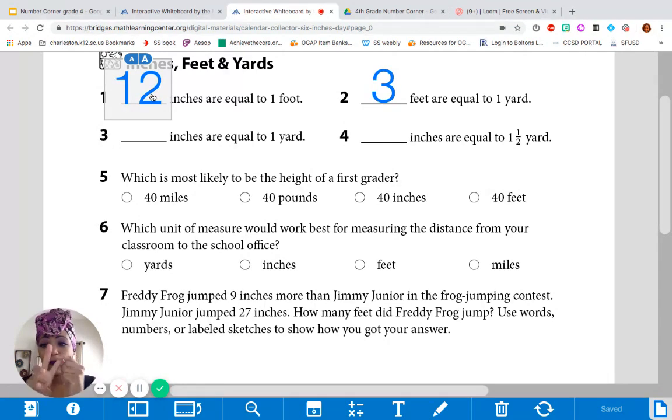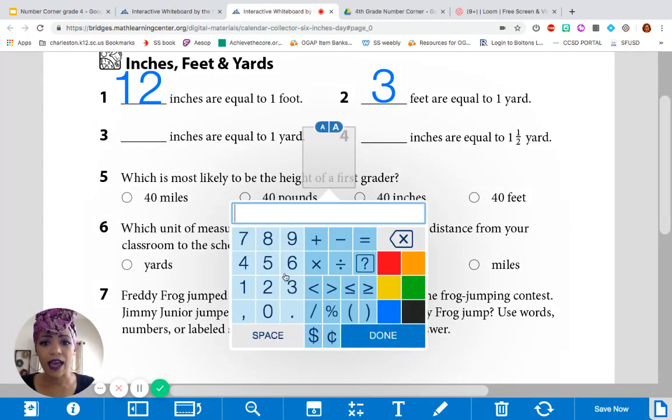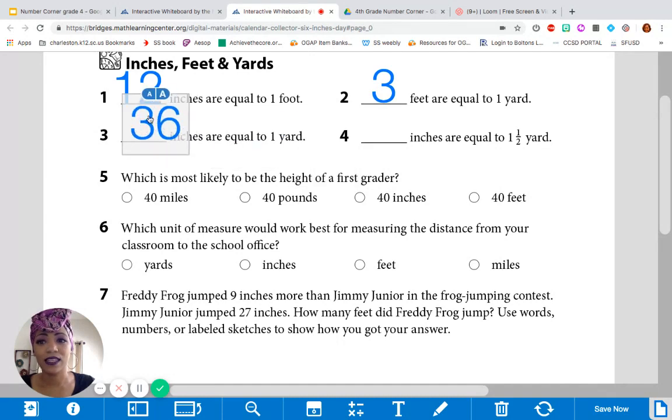Okay. But, there are 3 feet in a yard. So, that means 12 inches, 12 inches, 12 inches. Or, 12 times 3. How many inches are in 1 yard? Yeah. 36. You got it. Okay. We're moving really quickly with this. I'm so excited. That means you guys have gotten this down pat. So, that's a good thing.